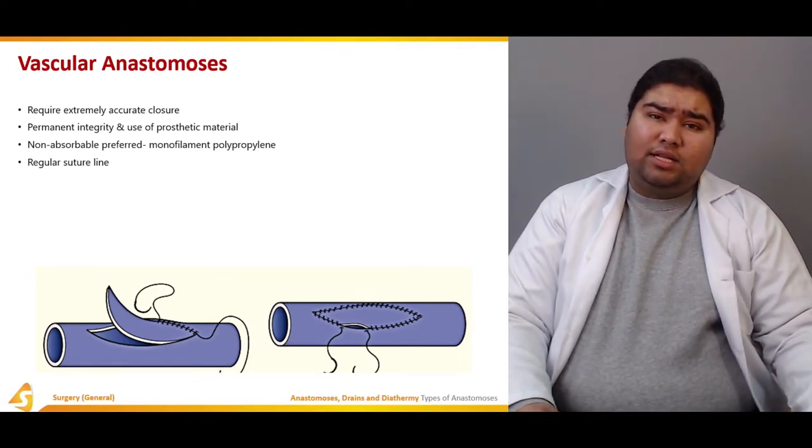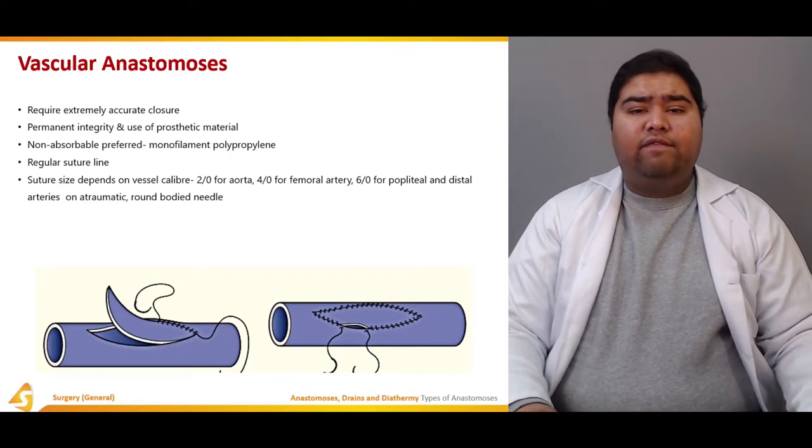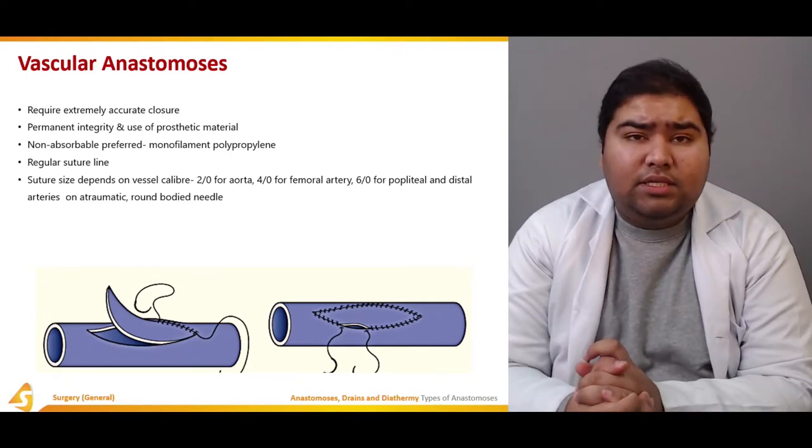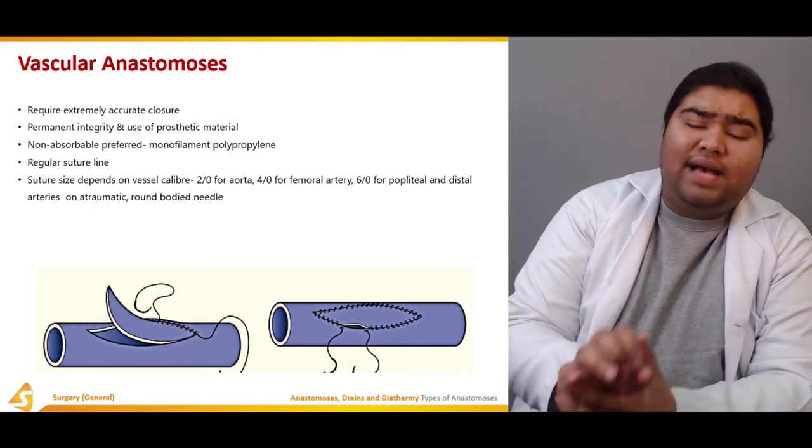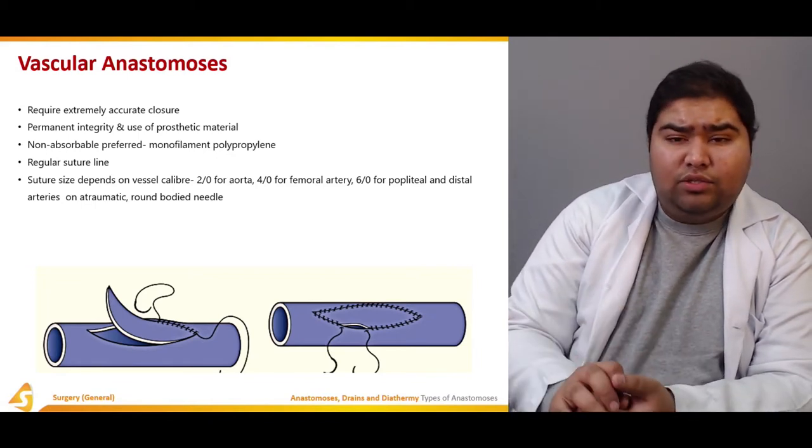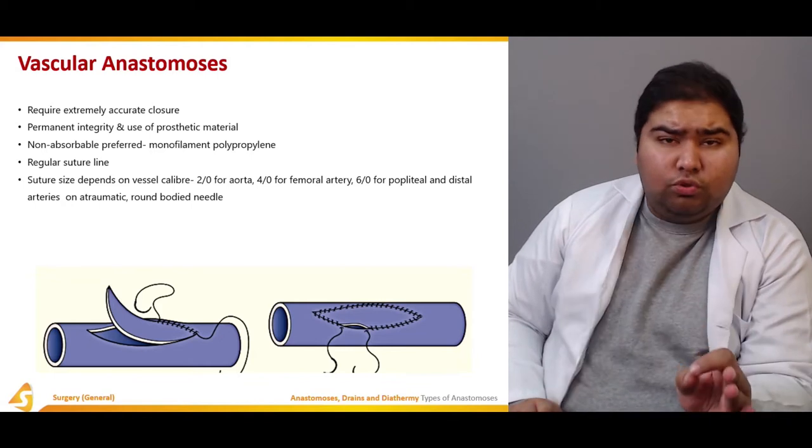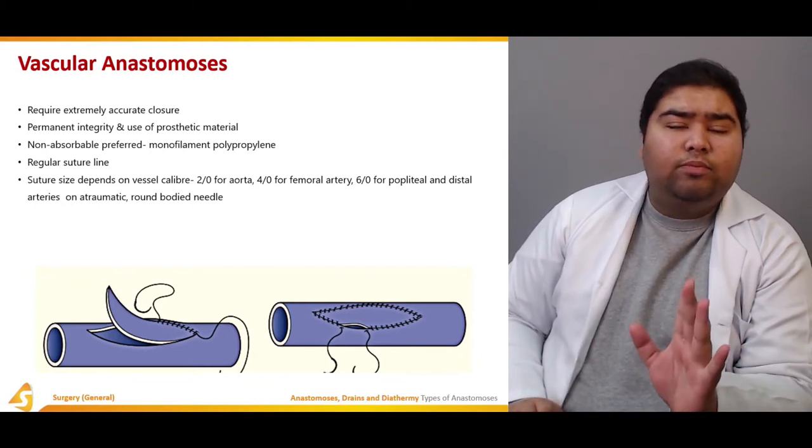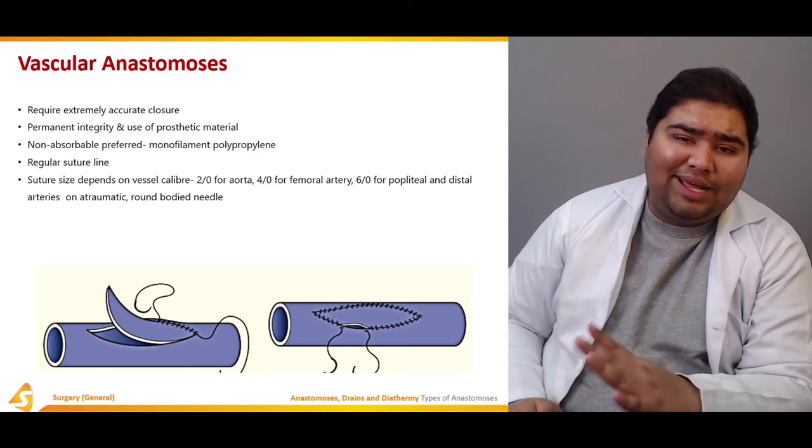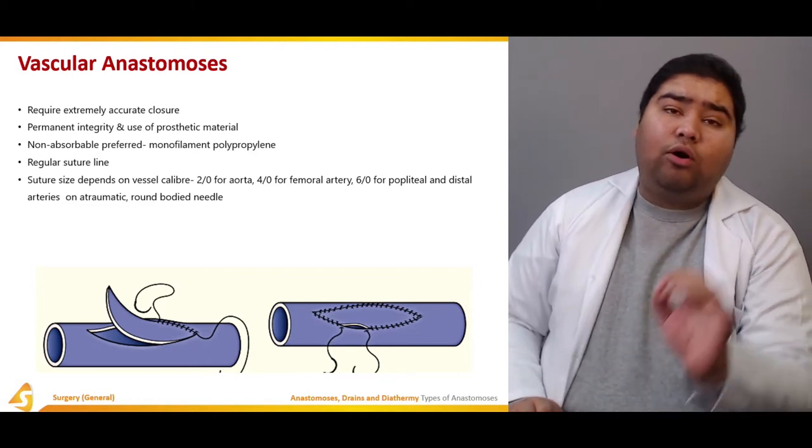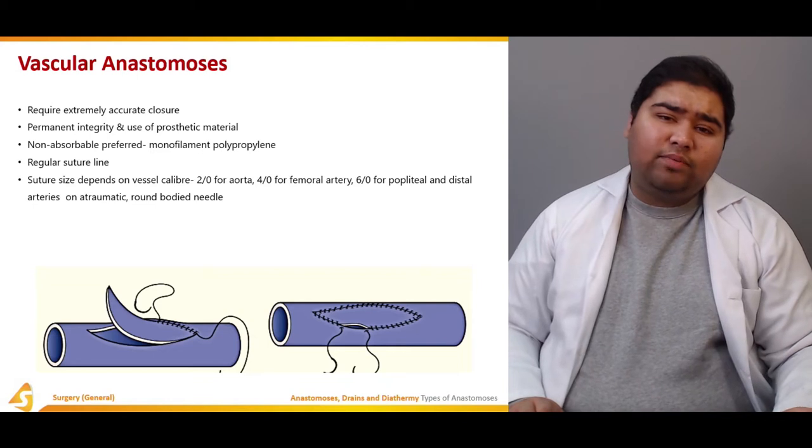The suture size depends on the vascular caliber. Depending upon the size of your vessel, you select the suture. You might choose 2-0 for aorta, 4-0 for femoral artery, 6-0 for popliteal and distal arteries. All of these should be taken on an atraumatic round-bodied needle.